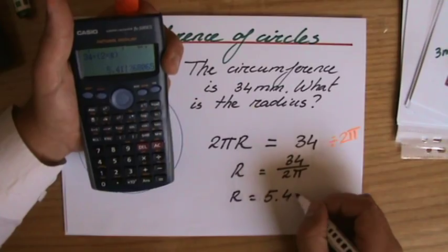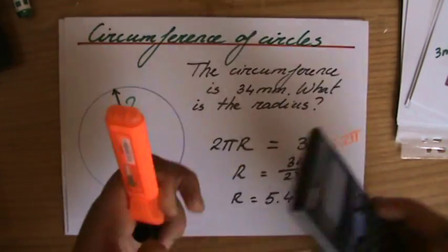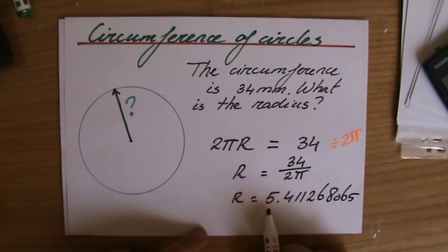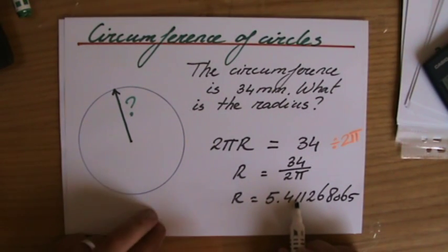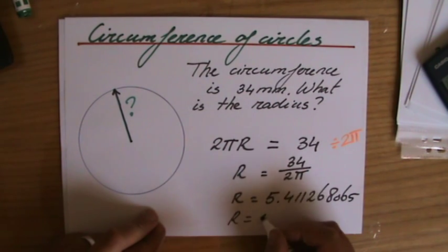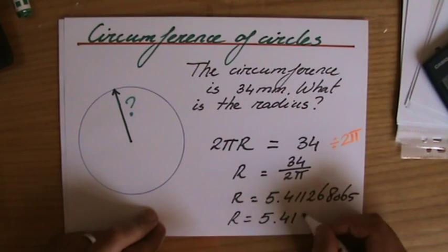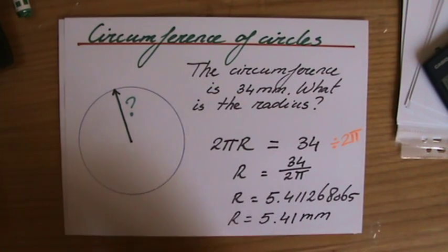Equals, and all those decimals I write down: 5.41126806065. Correct up to 3 significant figures—1, 2, 3—and the 1 stays a 1 because the next one is lower than a 5. So 5.41 millimeters is the radius of this particular circle.